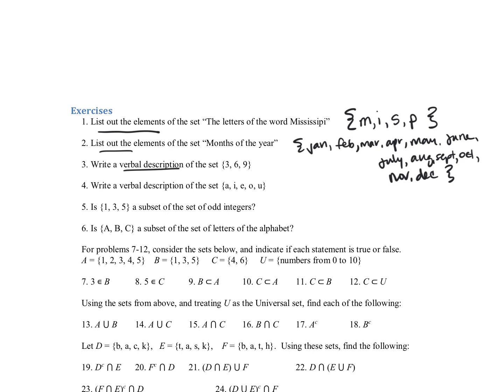For number three, you're writing a verbal description of that set. So three, six, nine, the first thing that comes into my head is that these are the first three multiples of three. And there's lots of other ways that you could describe it. For this next one, A, E, I, O, U, those are vowels. So the letters that are vowels would be a good description.